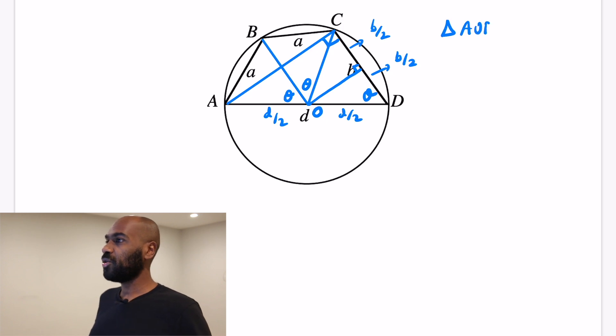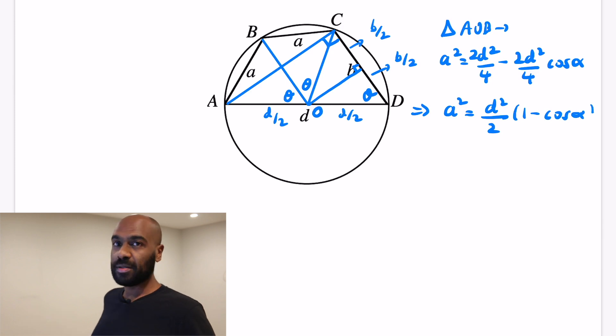So looking at particularly triangle AOB, we notice that A squared has to equal d squared over 2 plus d over 2 all squared, which is 2d squared over 4, minus twice d squared over 4 times the cosine of alpha. And alpha here, we really mean the theta that we were talking about before. So alpha and theta are playing the same role here. That comes from the cosine law on triangle AOB. Now, if we factor out the d squared over 2, we get A squared as d squared over 2 times 1 minus the cos alpha. And again, alpha here is the same as theta.